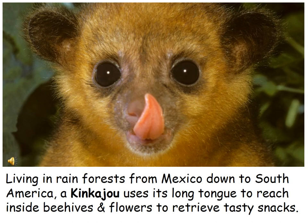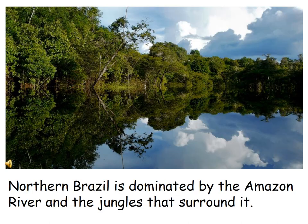The kinkajou lives in rainforests from Mexico down to South America. It uses its long tongue to reach inside beehives and flowers to retrieve tasty snacks, and it also has a prehensile tail, meaning it can hang from branches. In northern Brazil we will find the largest rainforest — the Amazon rainforest — dominated by the Amazon River and the jungles that surround it.